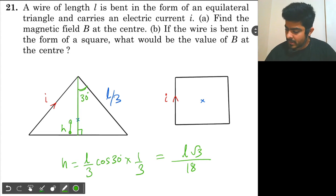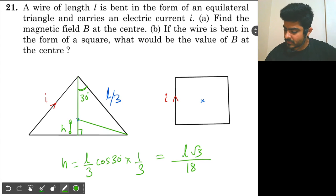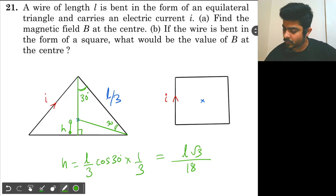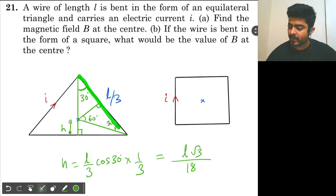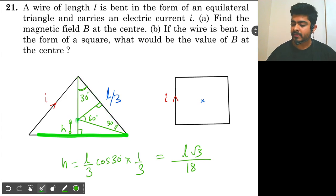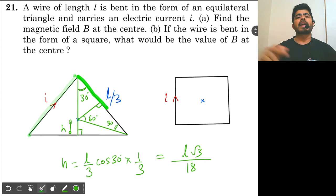Now let's join the line from the centroid to the end. This angle is 30 degrees and this is also 30 degrees. If I drop a perpendicular here, this will be 60 degrees. Because of symmetry, the magnetic field due to this wire will be the same as the magnetic field due to each of the other wires. So if I can find the field due to one side, I can multiply it by 3 to find the net magnetic field.